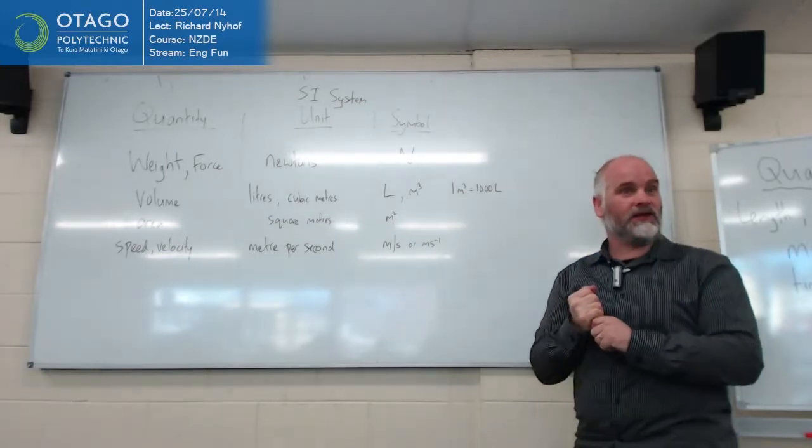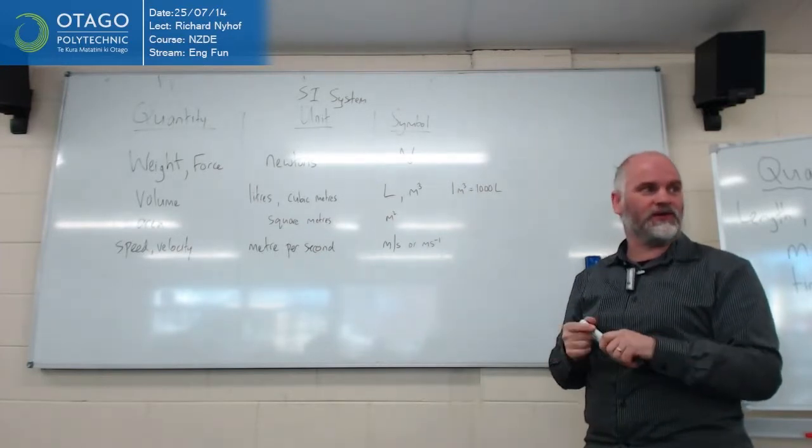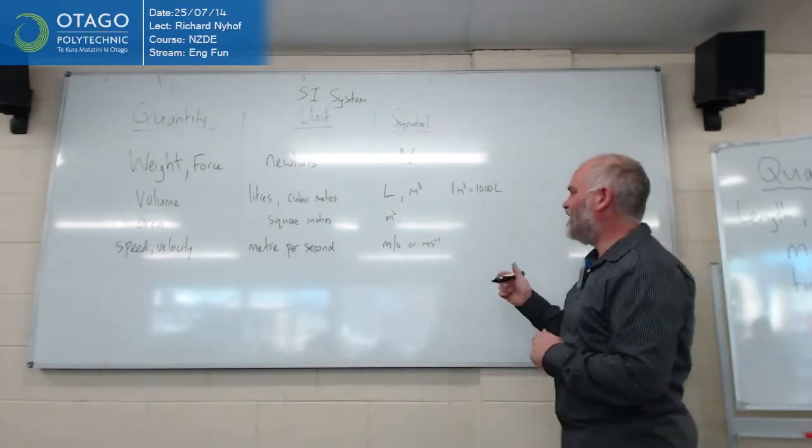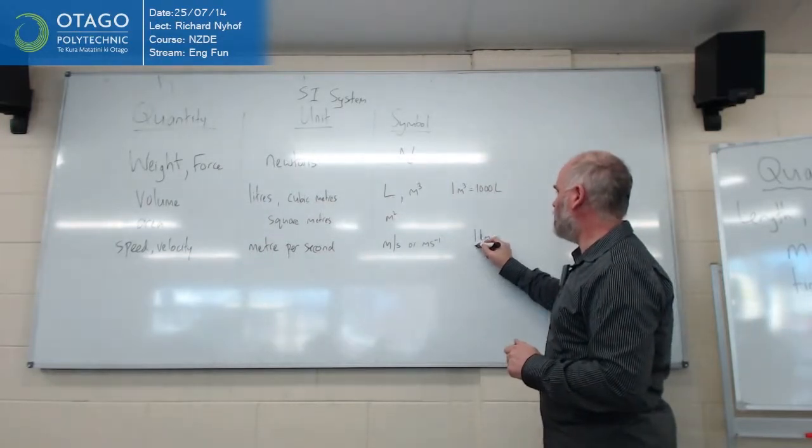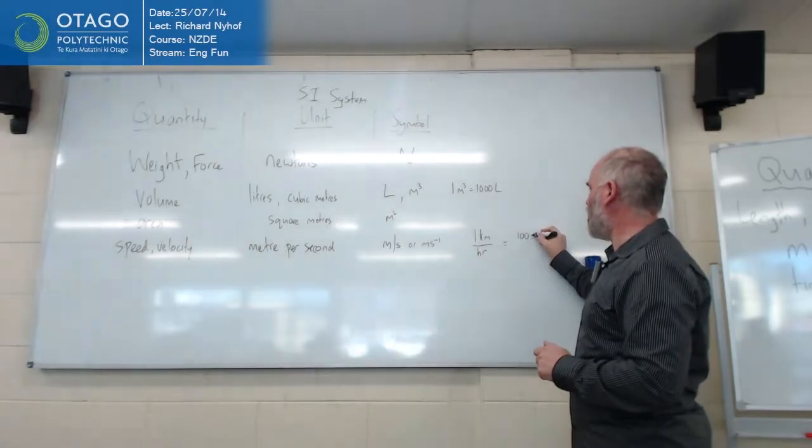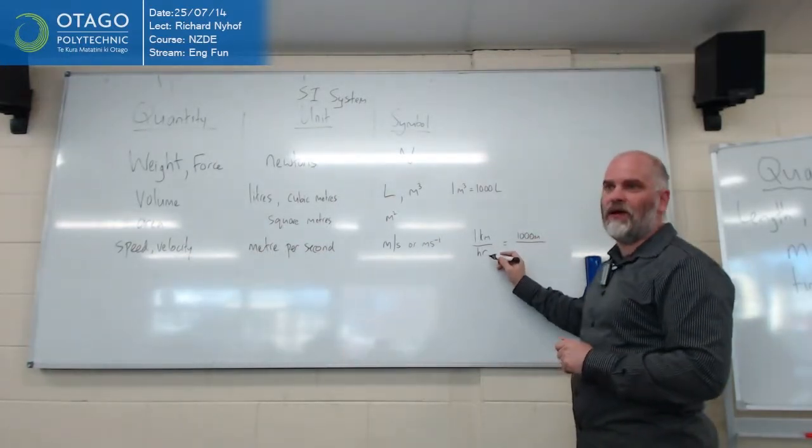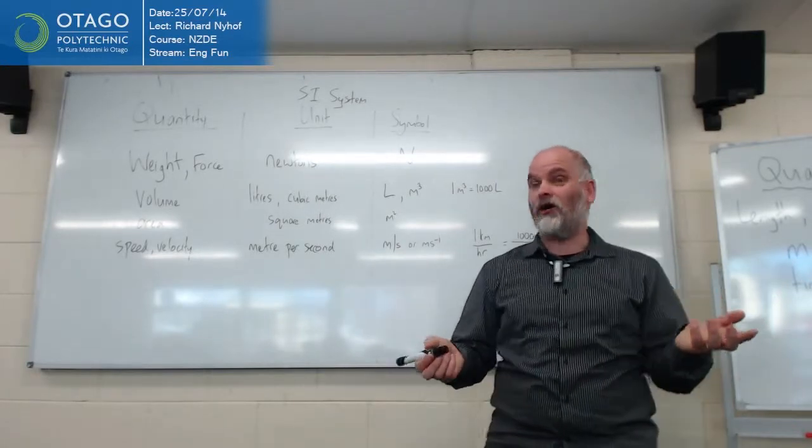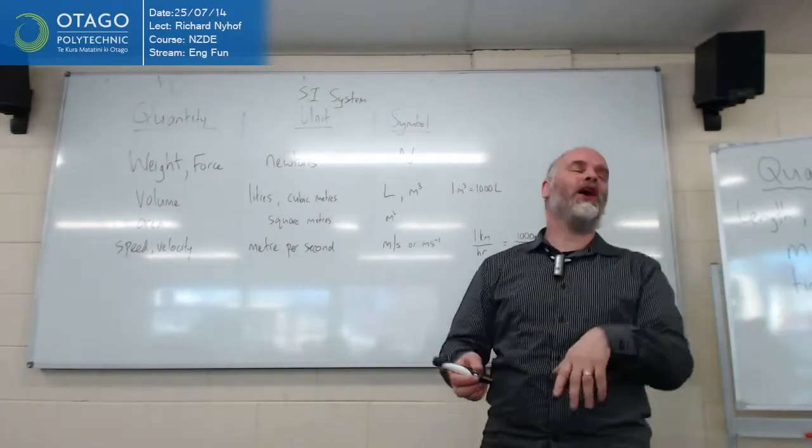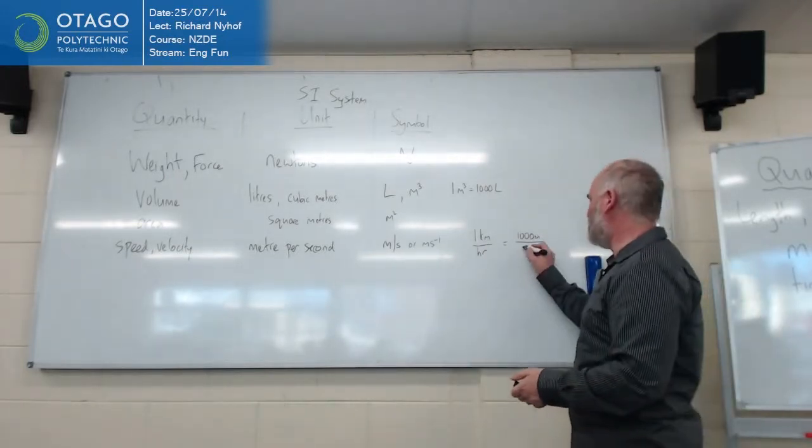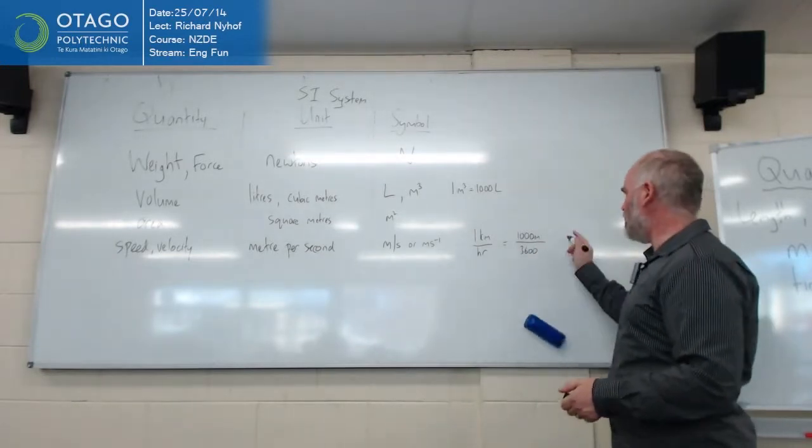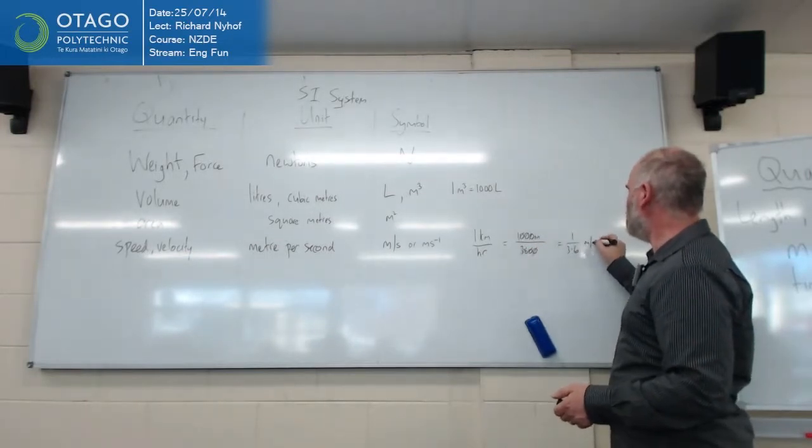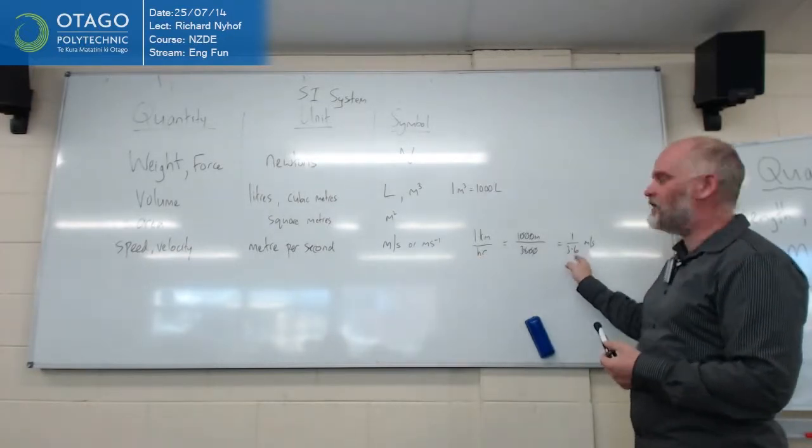To do with kilometers per hour, does anyone know how to change kilometers per hour into meters per second? Let's have a look at one kilometer per hour. So that would be 1,000 meters over how many seconds there are in an hour? 60 seconds in an hour. Obviously, count to 60. That would be an hour gone. 60 times 60. Which is 3,600. So you can do a whole lot of canceling out. So one divided by 3.6 meters per second. So if you want to change kilometers per hour into meters per second, you divide by 3.6.